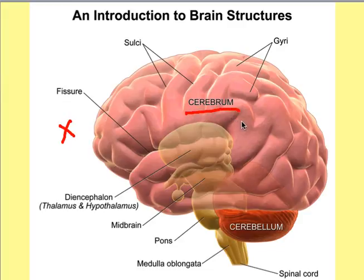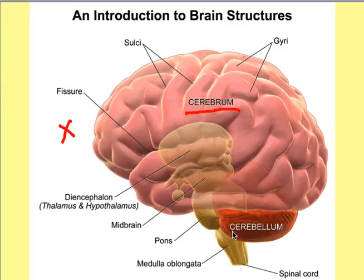The cerebrum is involved in all your conscious thought and thinking. Your personality and things like that are contained within there — this is a region of conscious thought. This part here is involved in balance and fine motor coordination.